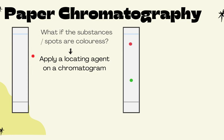If you carry out chromatography and the chromatogram is colorless and you cannot see anything, apply a locating agent. Spray the colorless substance with a locating agent, and you will be able to make the substance colored and visible.